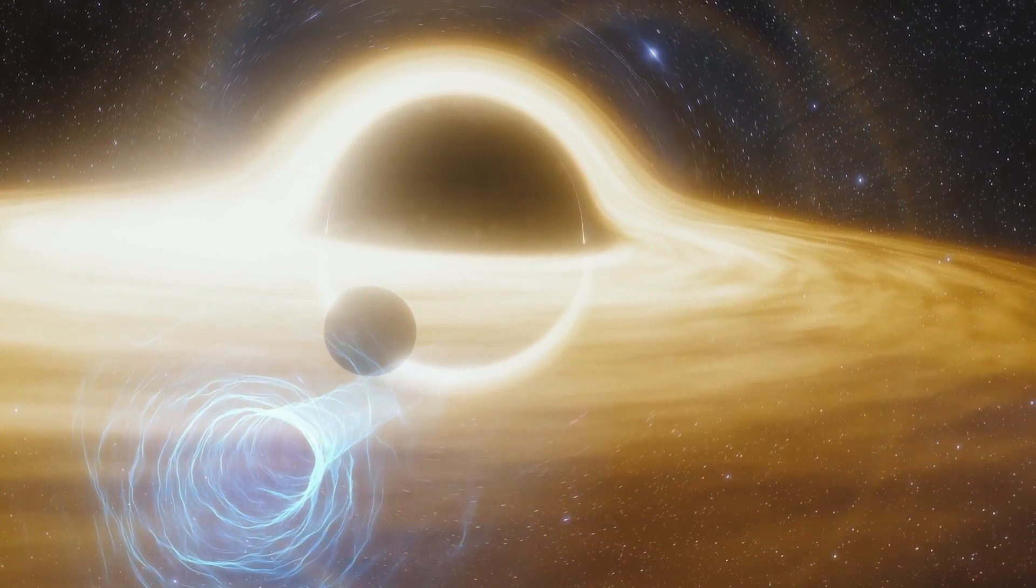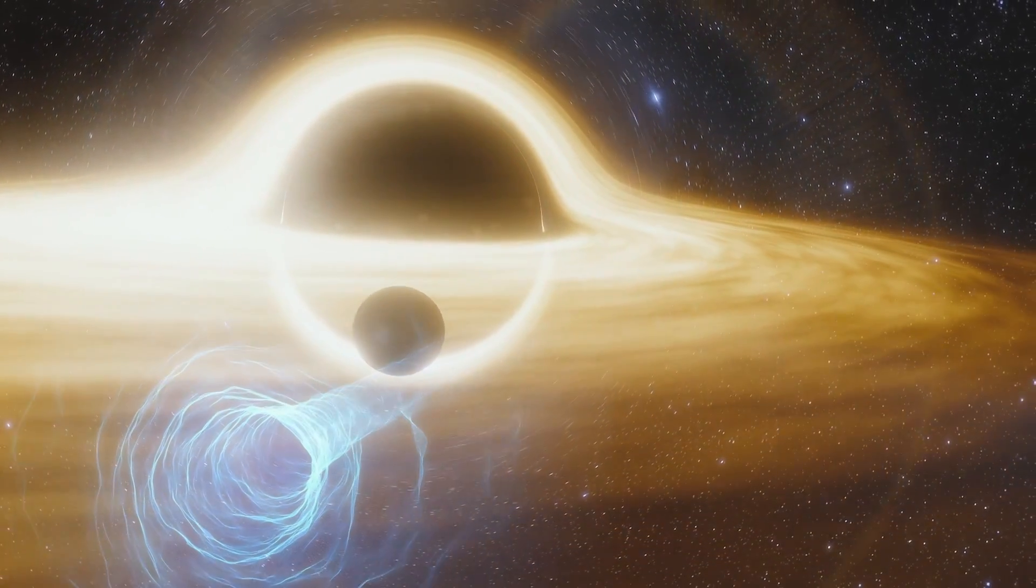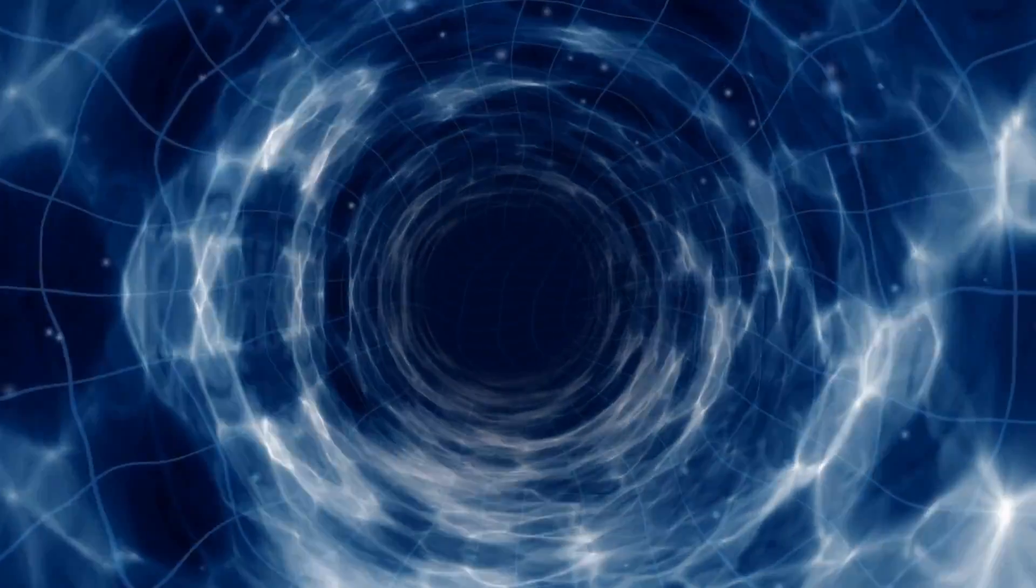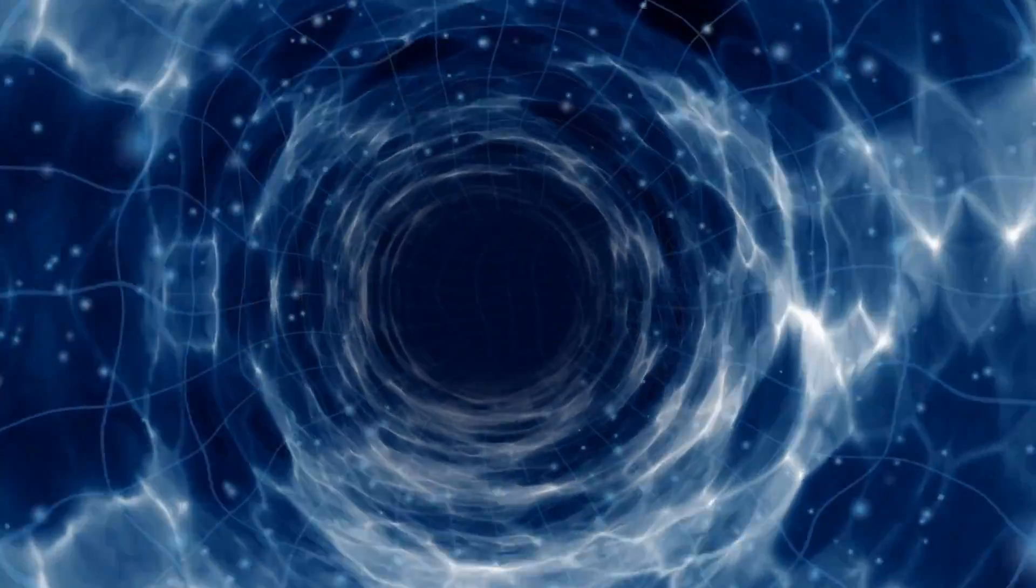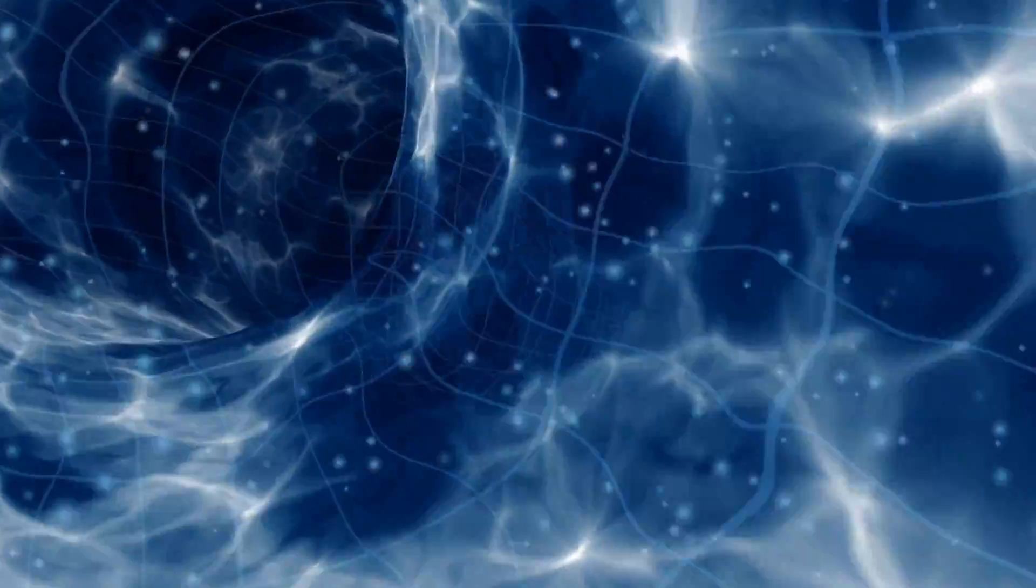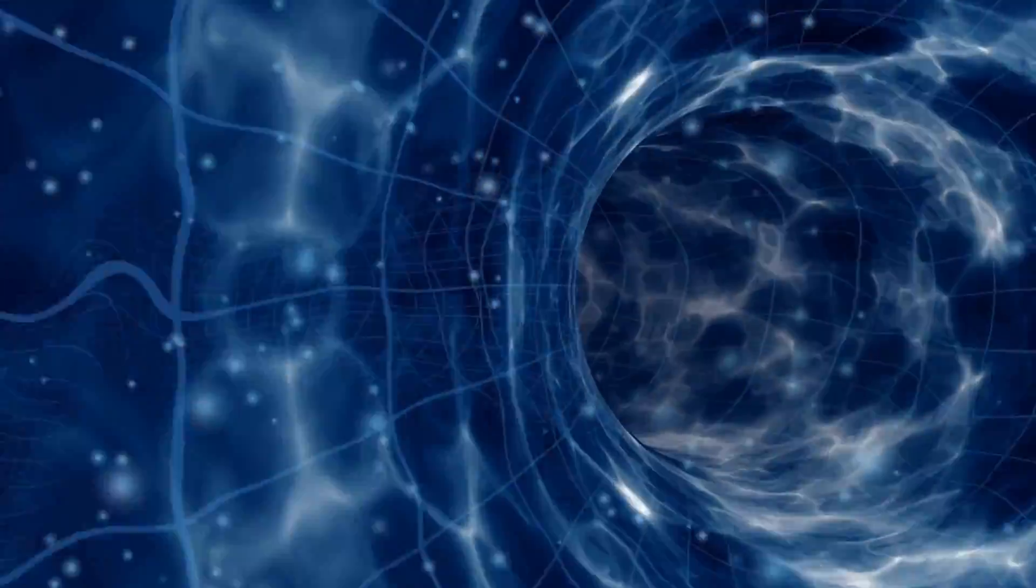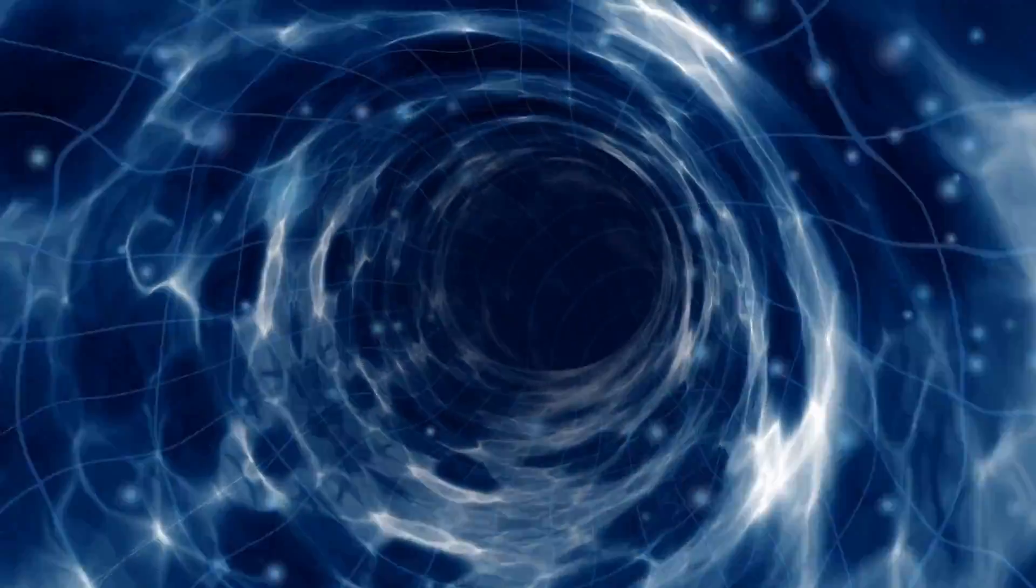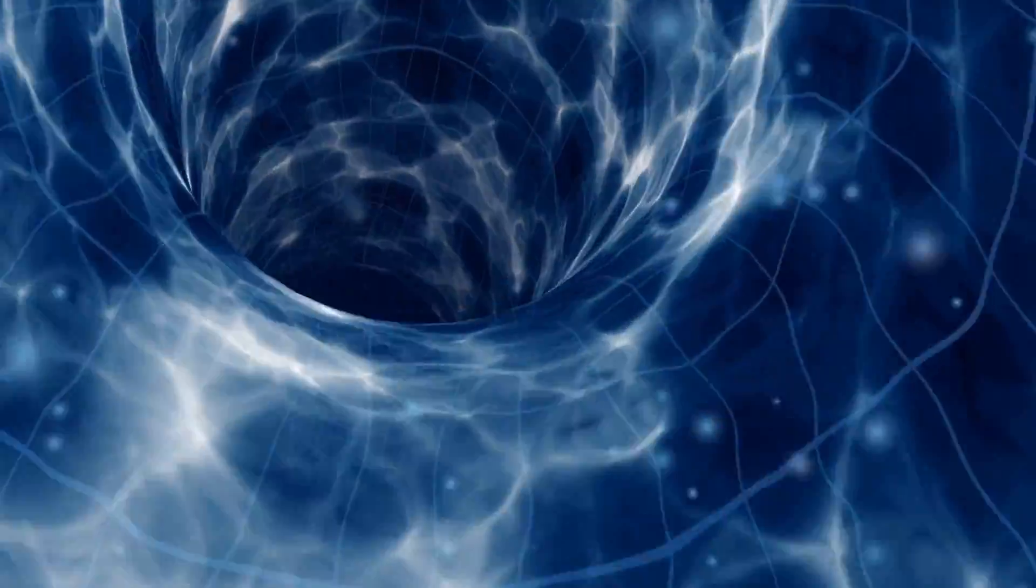But most physicists believe, and Stephen Hawking wrote a paper actually called the Chronology Protection Conjecture, these things would not be stable and you can't travel through them, so you can't build time machines. However, it's worth saying that wormholes are becoming very, very fashionable now in what's called the ER equals EPR paradigm.